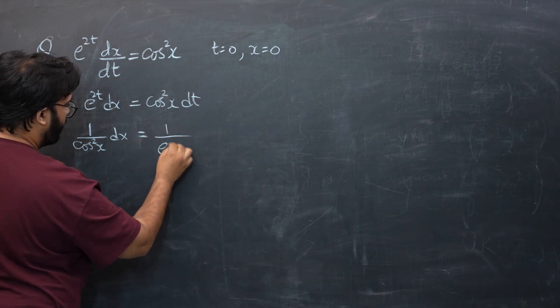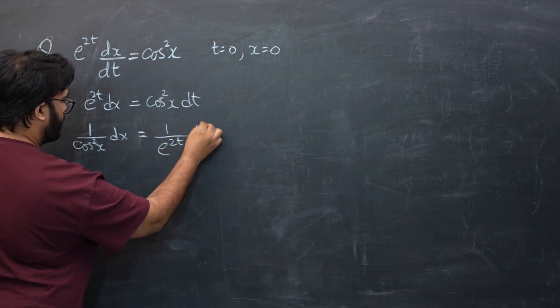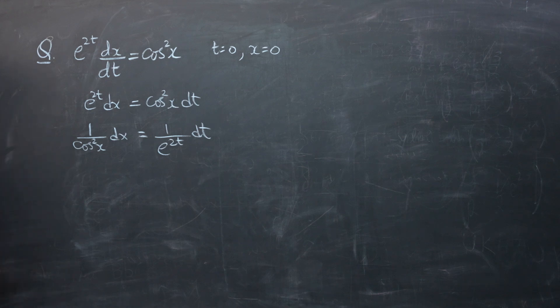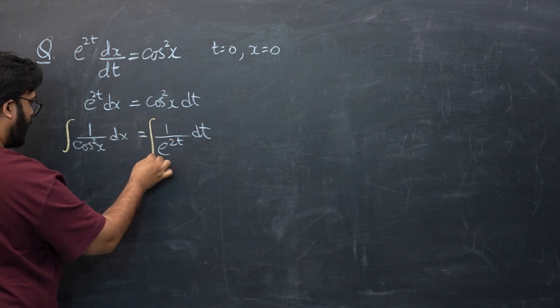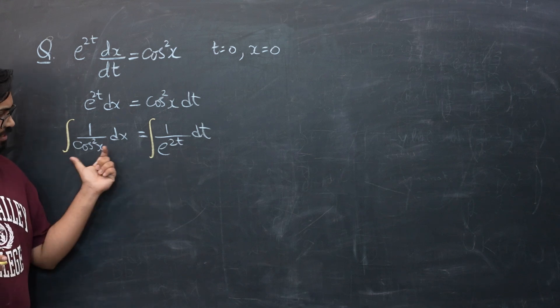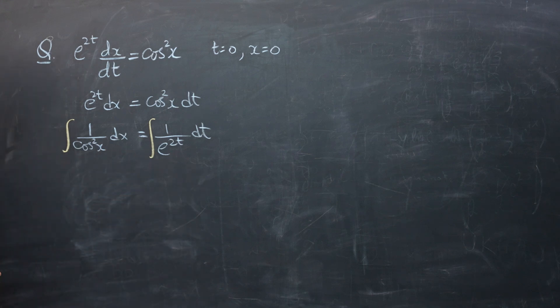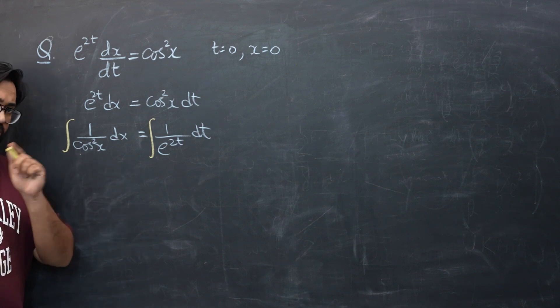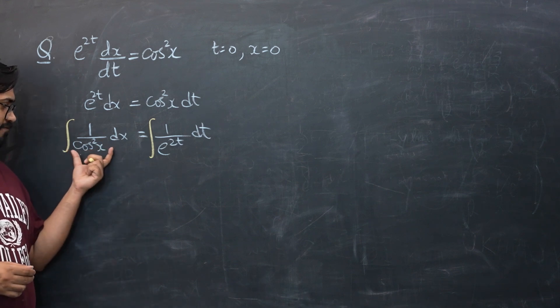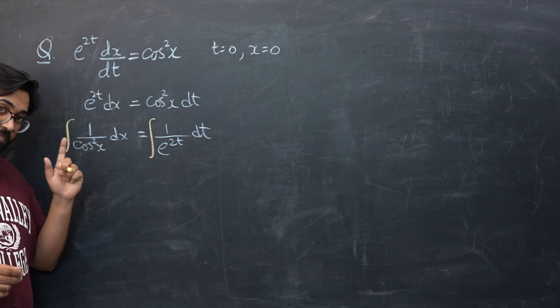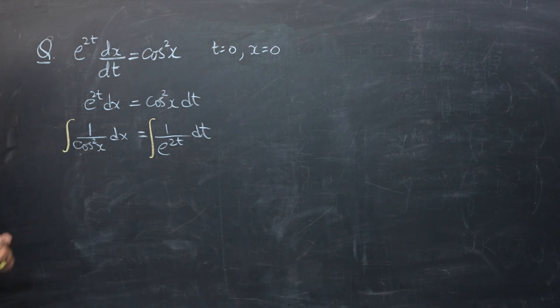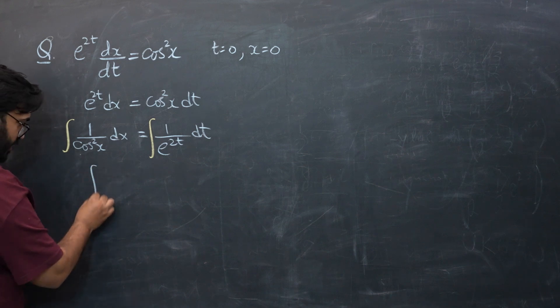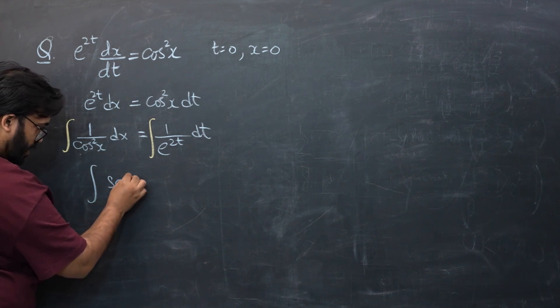So now we have successfully separated the variables. Now let's introduce integration signs. Now let's start about integrating these values. For the left one, you must have memorized the class notes very clearly and I have done a practice case over there which every student must memorize. That 1/cos² is a really simple integration if you can identify what this is. This actually is sec²x.